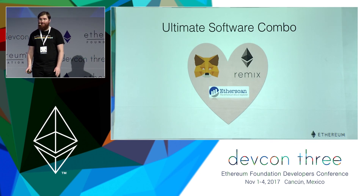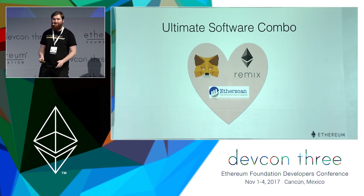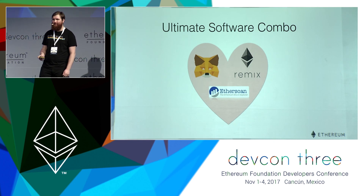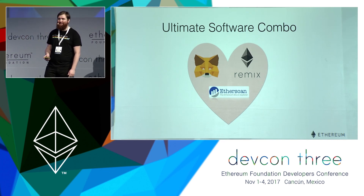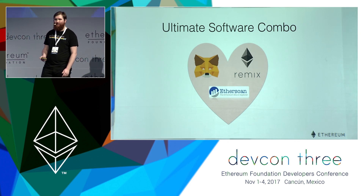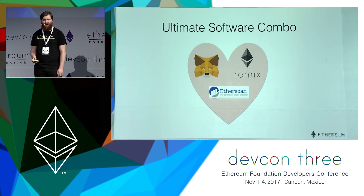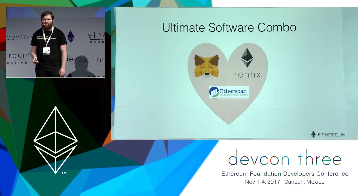I'm going to walk through a contract from creating it to deploying it to looking at it in a blockchain explorer. All the tools you need are online right now. MetaMask is a browser plugin — available in Chrome and Firefox — that acts as a bridge between your browser and the Ethereum network. Remix is an online Solidity IDE where you can write and test code, run static analysis, call functions, and debug. Etherscan is a blockchain explorer so you can see the contracts you've created and the transactions you've processed.